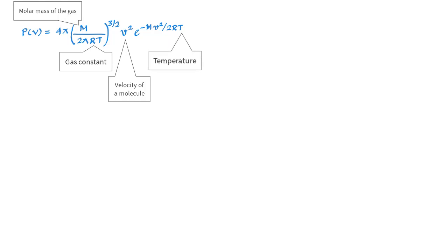And this relationship was given by the famous Scottish physicist James Clerk Maxwell in 1852 and his result is known as Maxwell's speed distribution law.